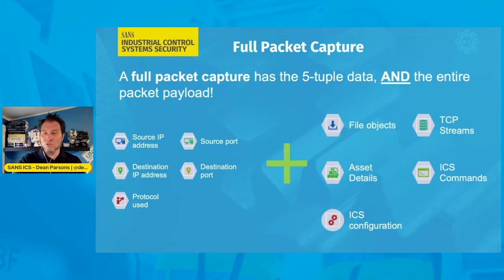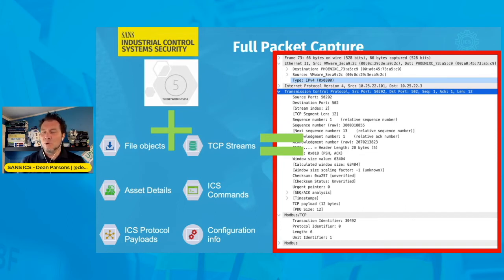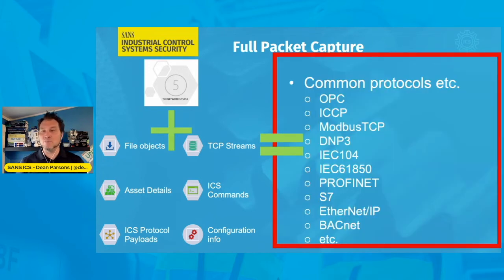So full packet capture is really where you want to be if you have the storage and processing for it. It does require a lot more storage and processing, but when you achieve this, you have full network visibility. Looking at the full packet capture in Wireshark, we have all of the details — not just the packet header information, but as you see on screen, we have the Modbus TCP connectivity information in the full payload. We can see the unit identifier and breaking down that specific PCAP, we can further look at the function codes. With the full PCAP, you get to observe all the protocols in your ICS: OPC, ICCP, Modbus TCP, DNP3, IEC 104, GOOSE protocol, and so on.